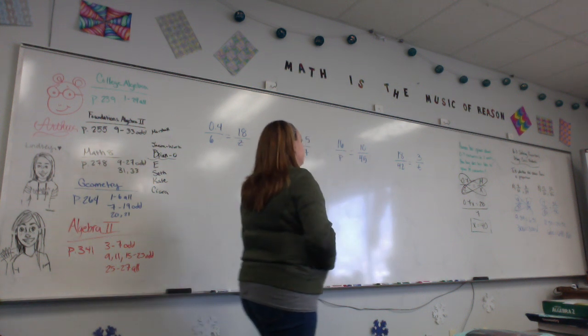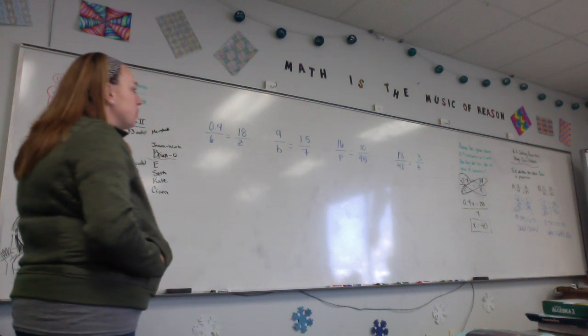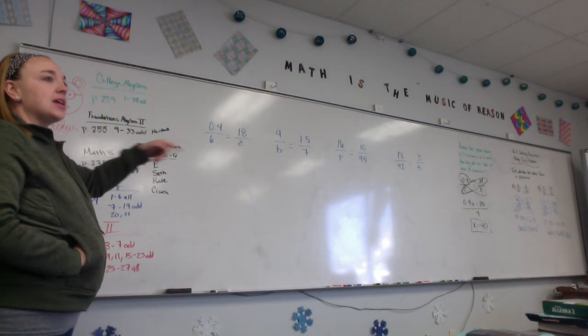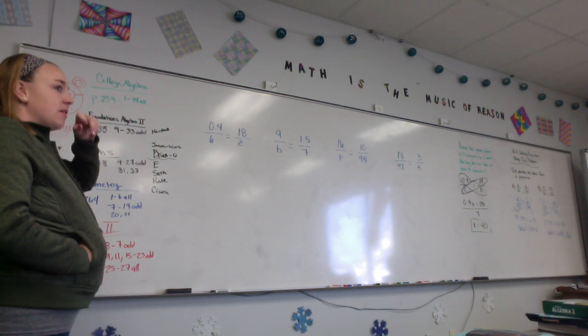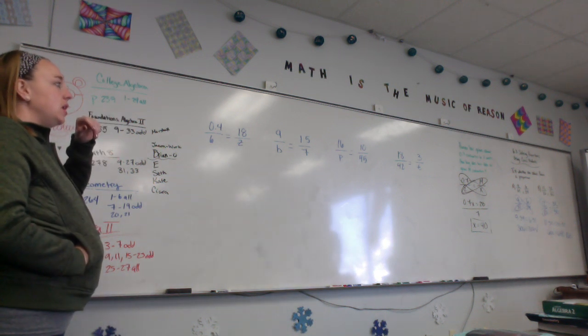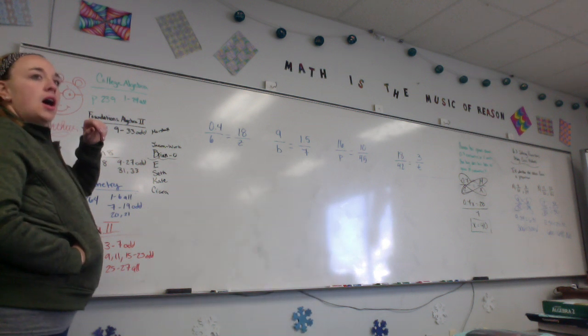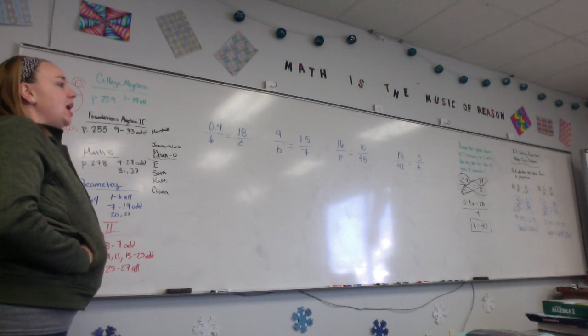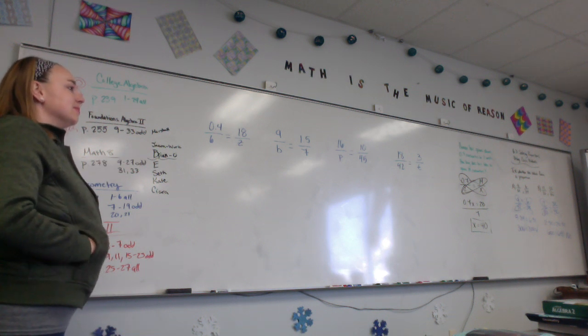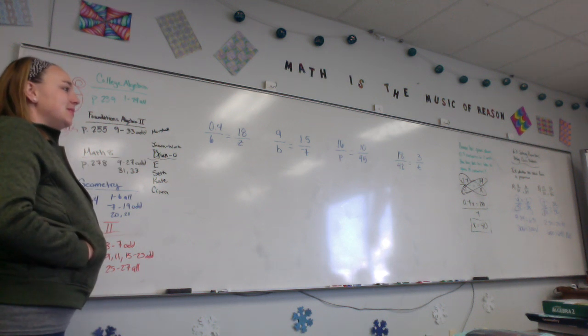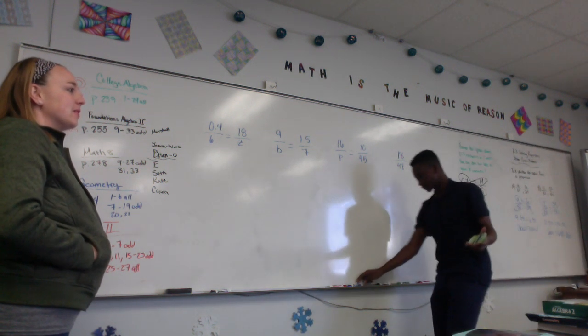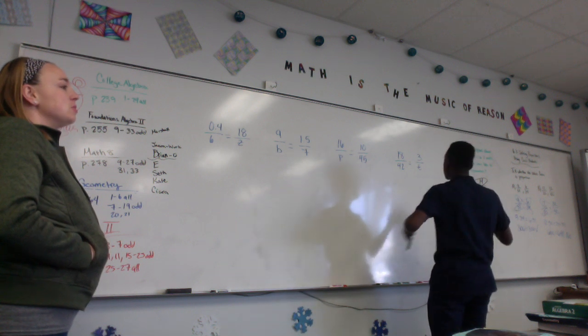Now, who would like to come up and solve the proportion of 18 over 42 equals 3 over T? Okay Jacob, you come. Josh, you come work on the next one. I might need a little help. Okay, come work on the next one. Bring a calculator if you need it. Come do the third one. And CJ, come do the last one.